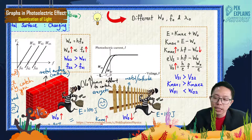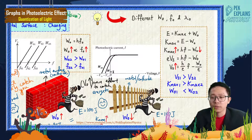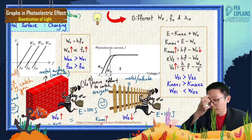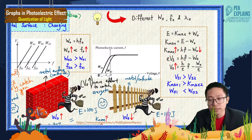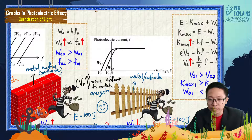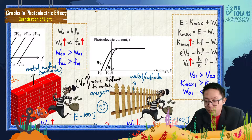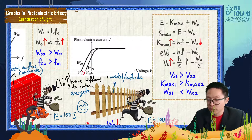Looking at this graph — which work function is higher, W₀1 or W₀2? The graph doesn't show the values, but you can guess by comparing their stopping potentials. Looking at VS1 and VS2, VS1 is bigger than VS2 — ignoring the negative sign, just look at the values.